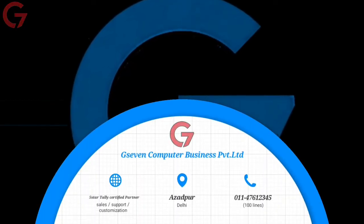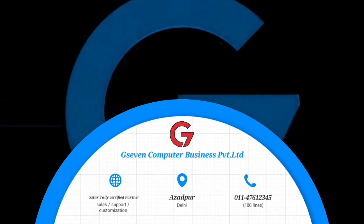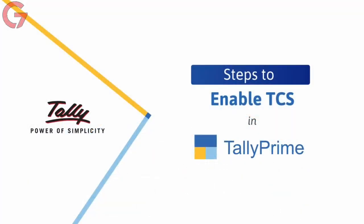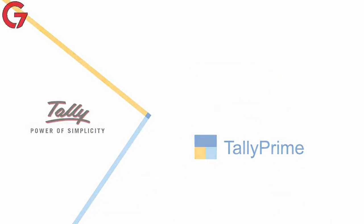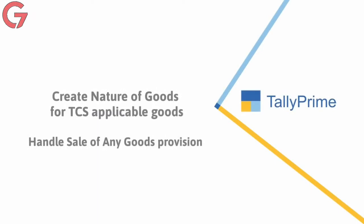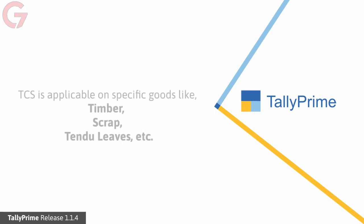Welcome to TallyPrime videos. In this video, we will look at the steps to enable TCS in TallyPrime and configure nature of goods for different nature of goods on which TCS is applicable. We will also look at the provisions made in TallyPrime to handle the sale of any goods introduced in the Finance Budget 2021. Tax collected at source, or TCS, is what a seller collects from his buyer for selling specific nature of goods.